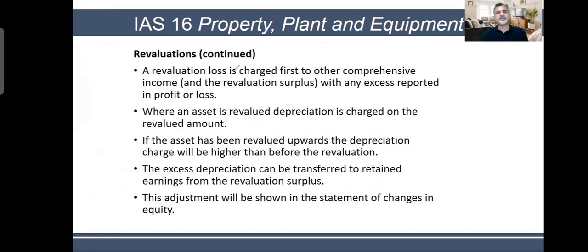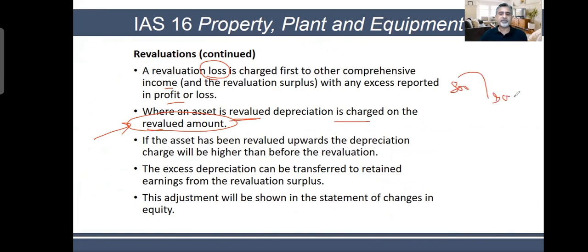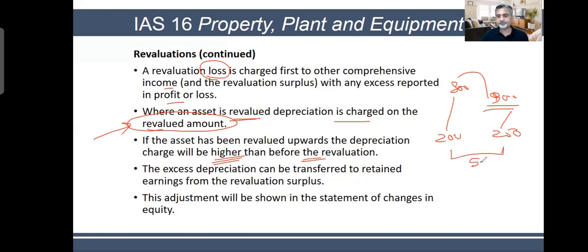When an asset is revalued, depreciation is charged on the revalued amount. If the asset goes from 800 to 900, depreciation changes from 200 to 250 — the extra $50 is called excess depreciation. This means profit is lower after revaluation, and shareholders will be concerned that although a revaluation gain was recorded, their dividends could fall because of the higher depreciation charge.